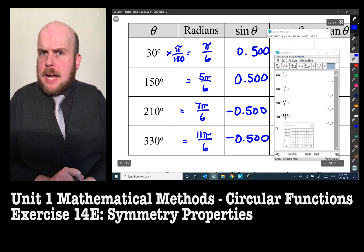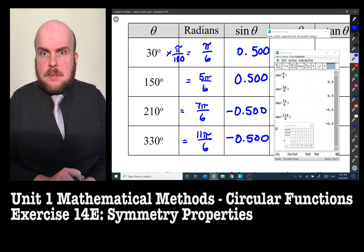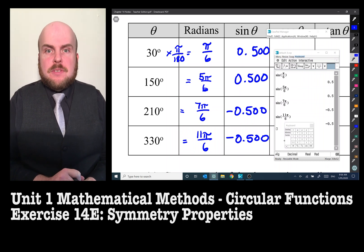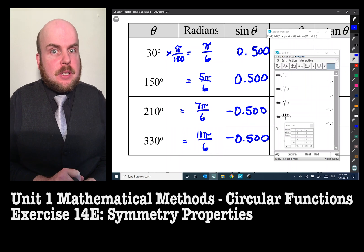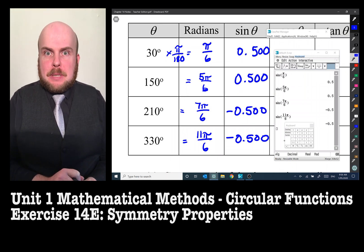We have two positive answers of 0.500 and two negative answers of -0.500. I've put those two extra zeros in there because the question said to do to three decimal places.